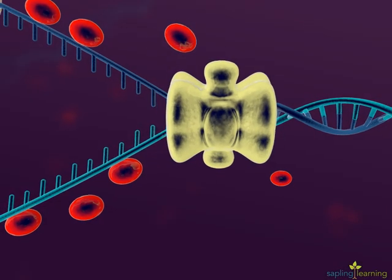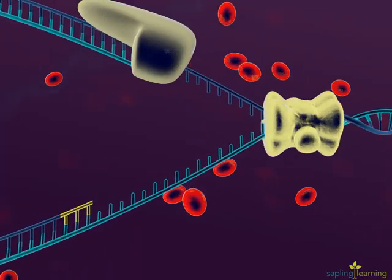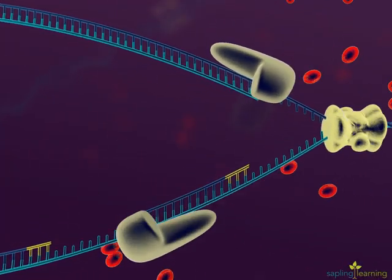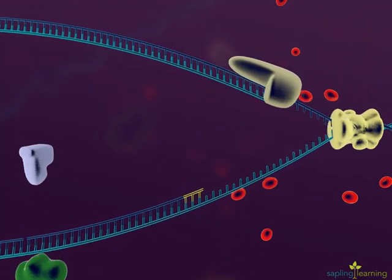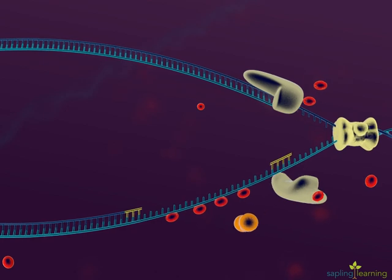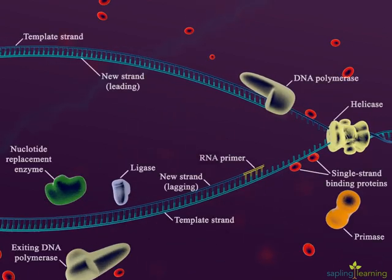Helicase continues to unwind the original DNA strands. Both strands are replicated at the same time. The leading strand replicates continuously toward the replication fork, while the lagging strand replicates in fragments away from the replication fork. This process continues in multiple locations until the entire chromosome is replicated.